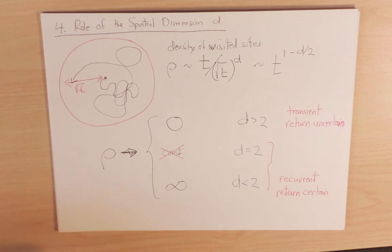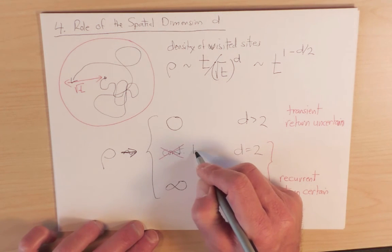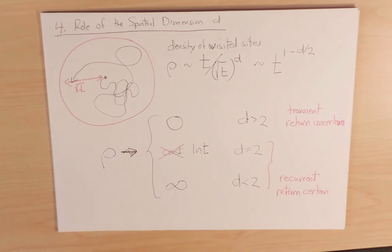And it turns out that the correct behavior of the density is that it goes like log t in two dimensions. So the fundamental result of this discussion here is that for d less than or equal to 2, a random walk is recurrent and return is certain.